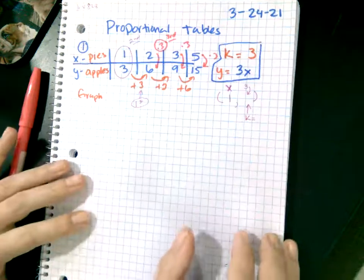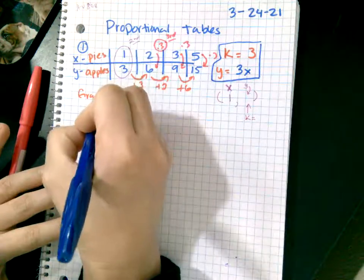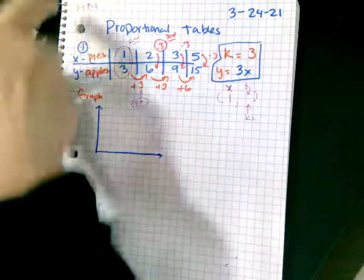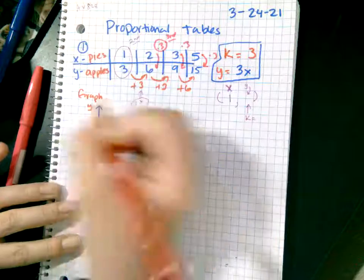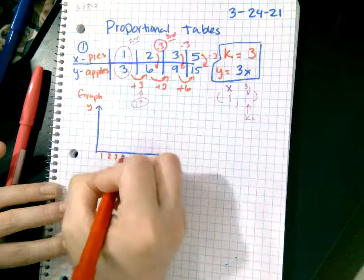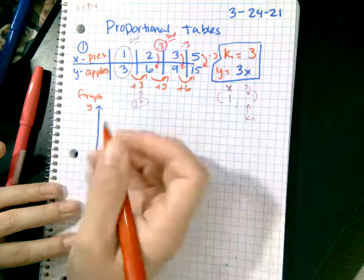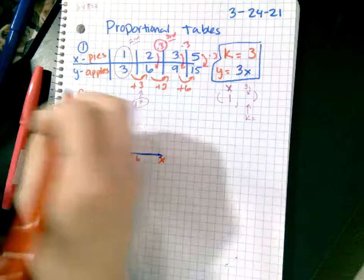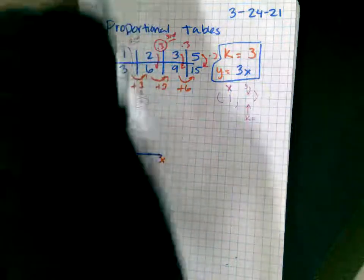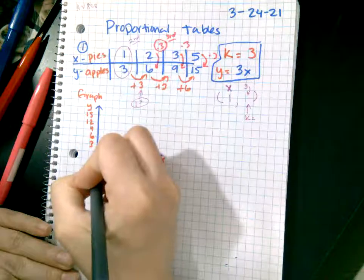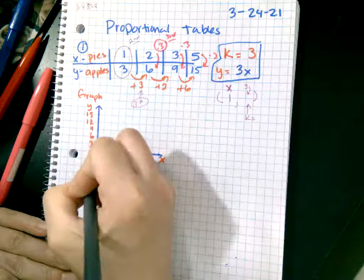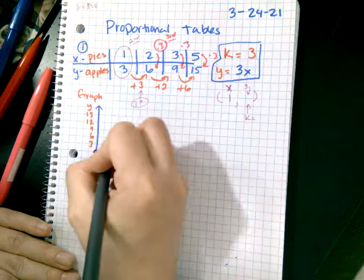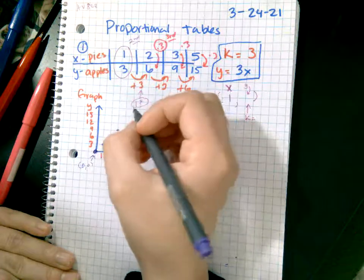My unit rate is three, so therefore my equation is y equals 3x. And if I graph it, this is y, this is x. I'm gonna dot the points. Zero zero, don't forget about zero zero.